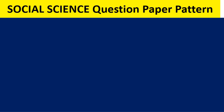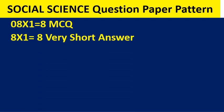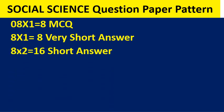Social Science Question Paper Pattern. This time you will have the question paper on the model of 10th Standard paper. You will have 8 multiple choice questions for 8 marks, 8 one-mark very short answer questions — here you can write either in one word or a sentence. Then 8 questions for 2 marks, totally 16 — short answers.